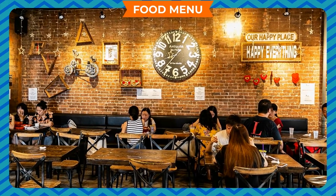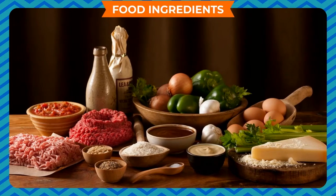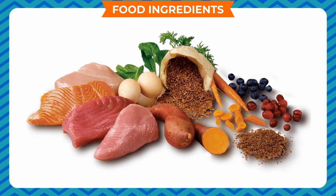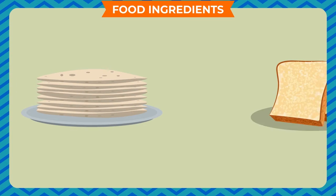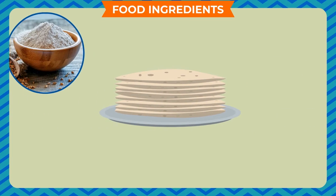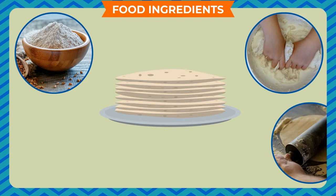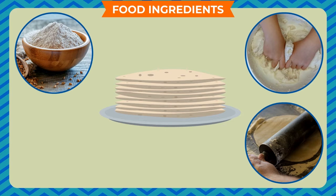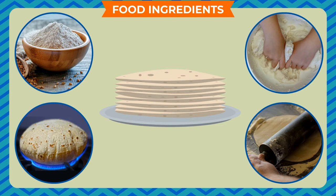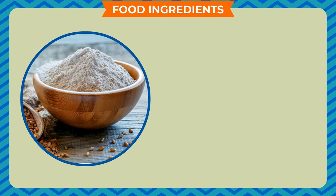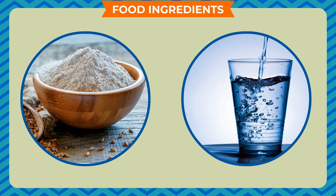Food ingredients: Consider any dish eaten by you on a regular basis, for example chapati or bread. A chapati is made from wheat flour (atta) by mixing water with the flour, then kneading and rolling it to give a round shape, and finally cooking it. Only two main ingredients are required to make a chapati: wheat flour and water.